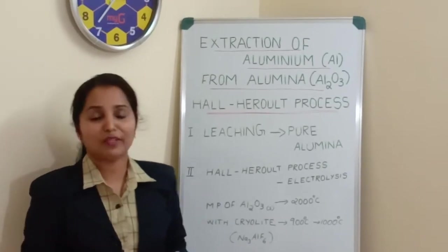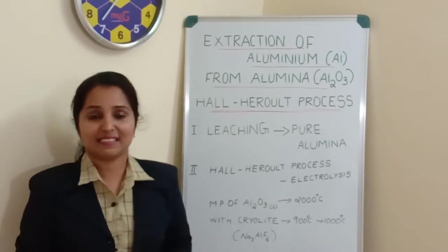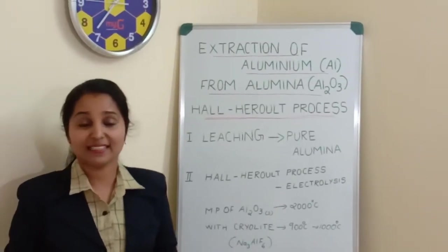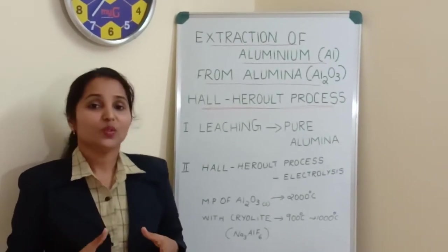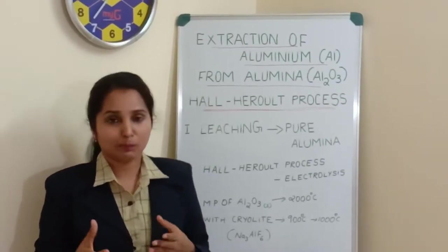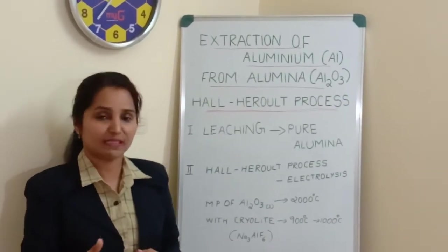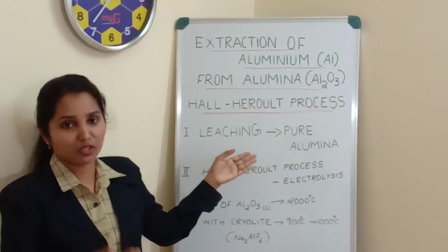We know the principal ore of Aluminium is Bauxite. When we get Bauxite from the earth's crust, it contains many impurities such as Iron Oxide, Titanium Oxide, Sand, etc. So we will take this powdered Bauxite ore and we will take this to undergo concentration. And the concentration method is known as leaching of Bauxite ore.